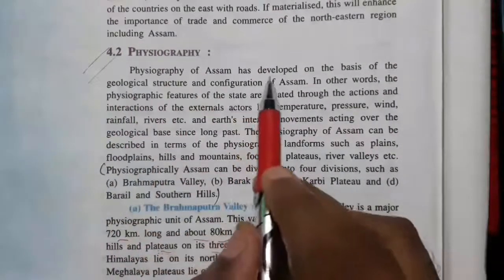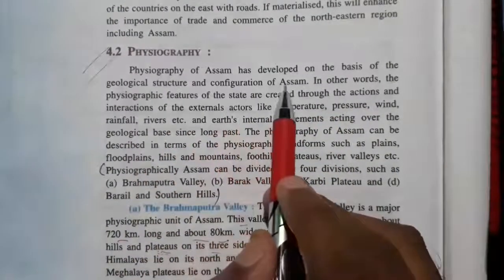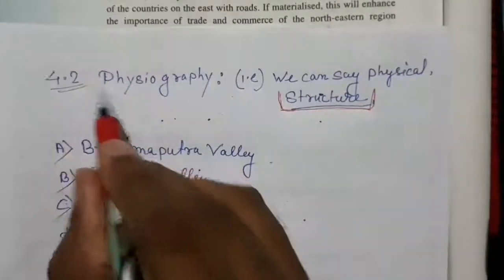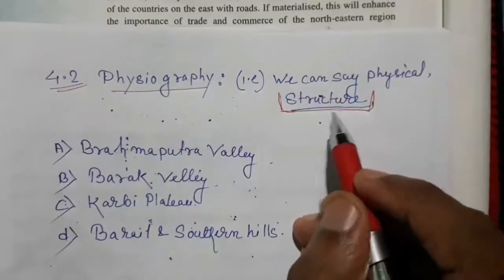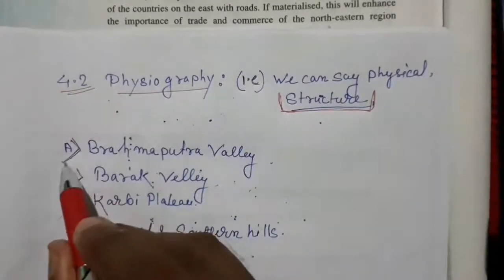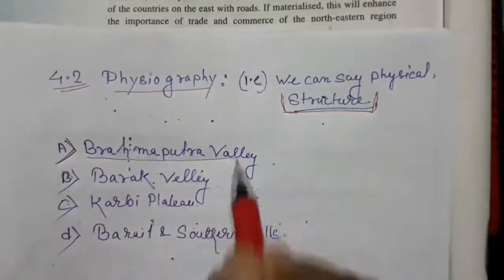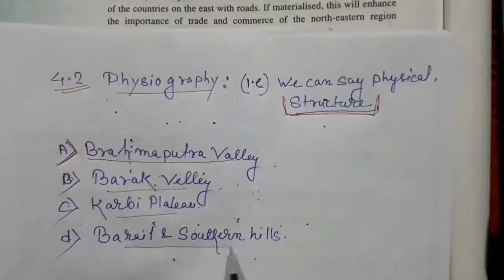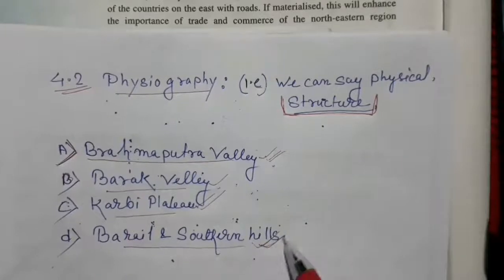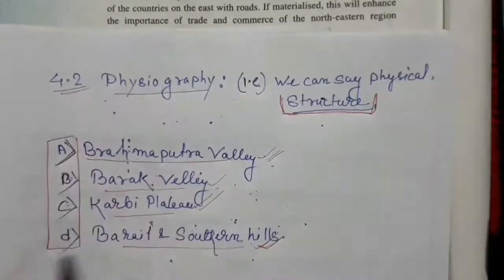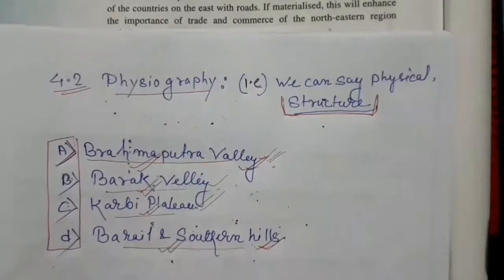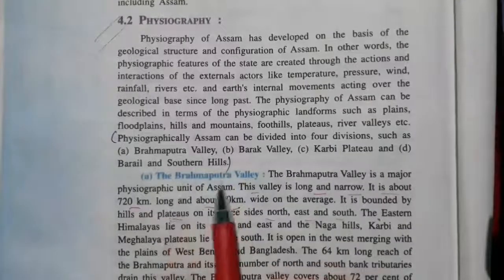Section 4.2: Physiography of Assam. Physiography has developed on the basis of the geological structure and configuration of Assam — that is, the physical structure of how Assam looks. If we look at the state physically, Assam is divided into four physiographical parts: the Brahmaputra Valley, the Barak Valley, the Karbi Plateau, and the Barail and Southern Hills.